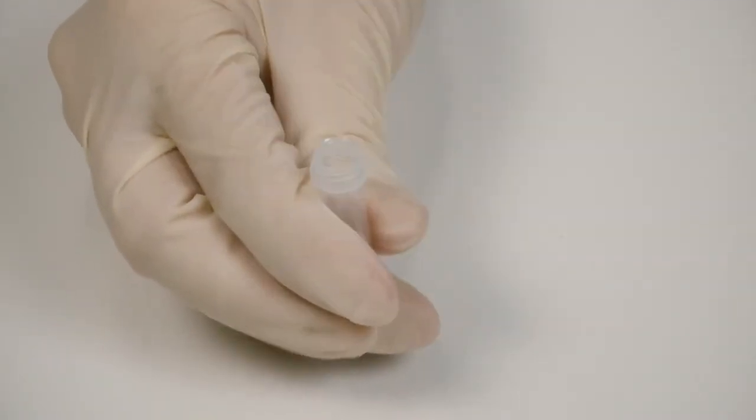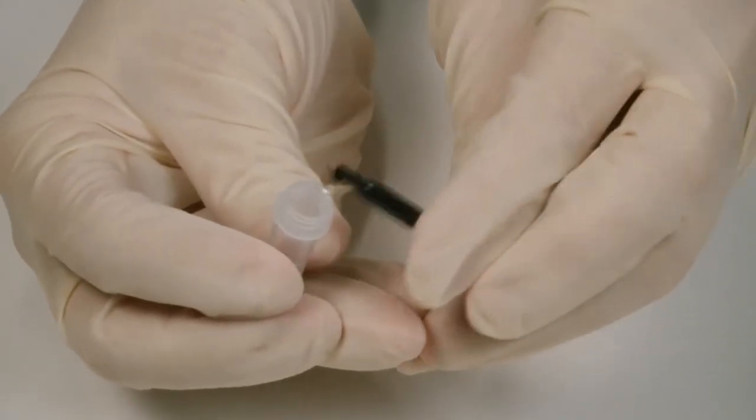Place the capillary into a sample dilution buffer vial and mix by flipping the tube at least 30 times.